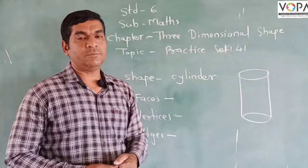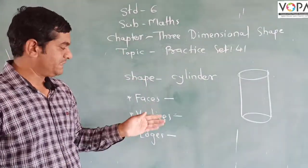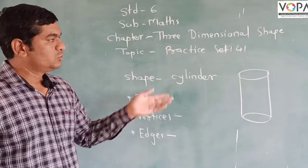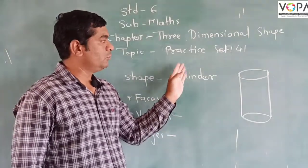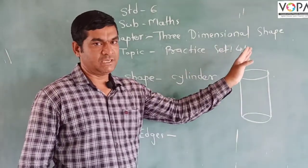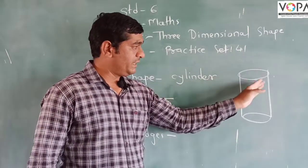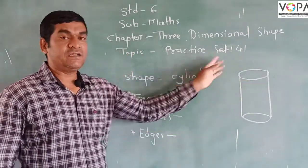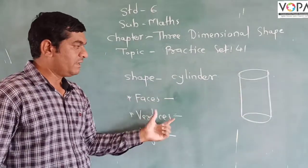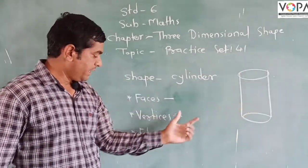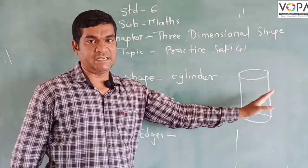In the last subtopic we learned what faces, vertices, and edges are. From this information we have to solve Practice Set 41. The diagram given is a cylinder, and we have to find how many faces, how many vertices, and how many edges are in the cylinder.